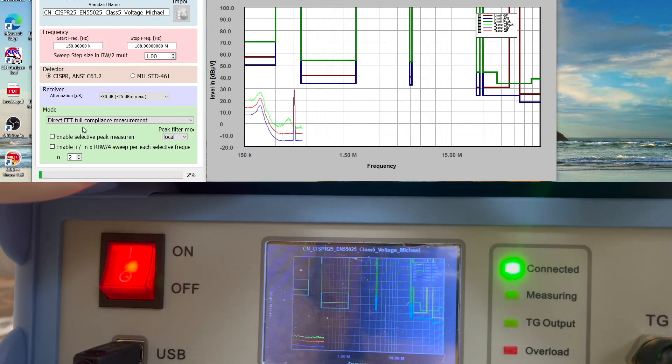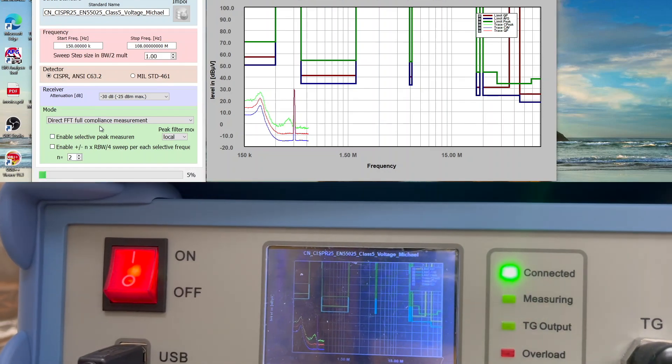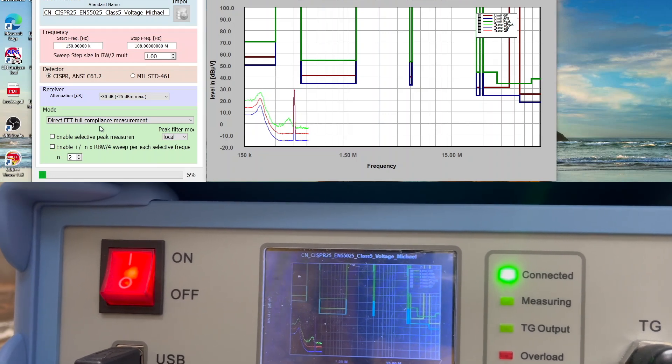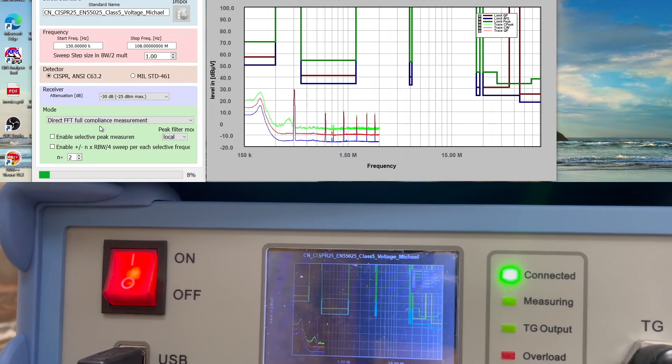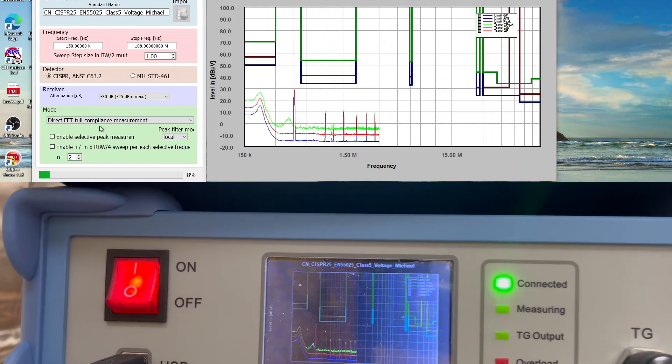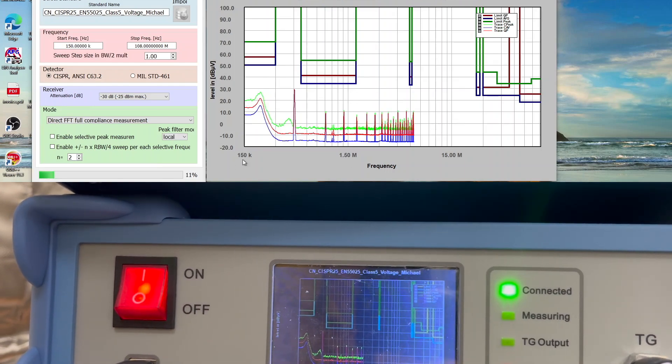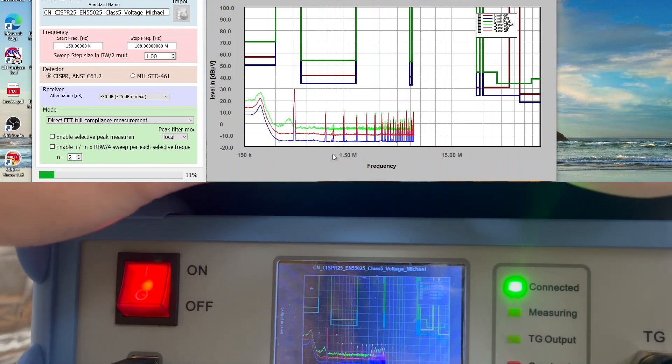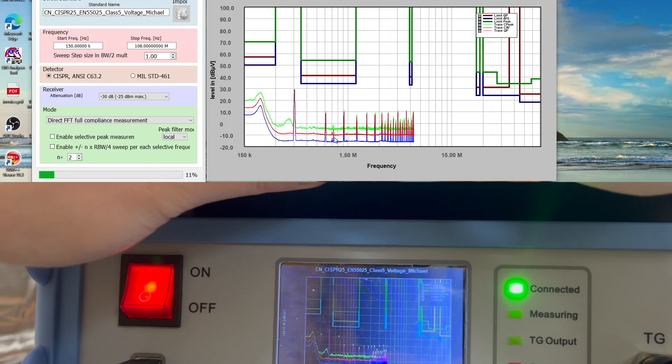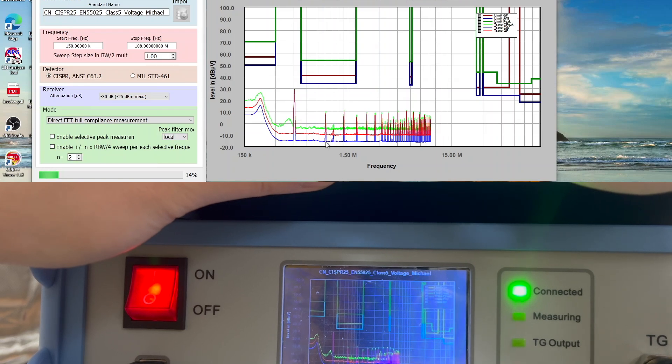Let's do the measurements using direct FFT full compliance measurements. So this gives me actually three results I believe - one is the average, one is the peak, and the other one is actually the quasi-peak. Because it uses FFT function, the sweep actually is extremely fast.